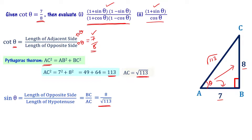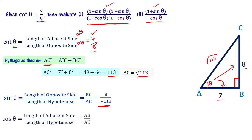Cos theta equals length of adjacent side to angle theta divided by length of hypotenuse. Adjacent side to theta is AB, and hypotenuse is AC, so cos theta equals AB by AC. Therefore cos theta equals 7 by square root of 113. Please note the sin theta and cos theta values.